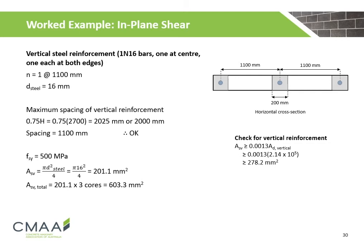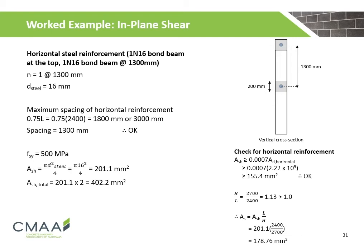For vertical reinforcement, N16 steel bars are located one at each edge and one at the centre, spaced at 1,100 mm. The spacing shall be less than 0.75 times the height or 2,000 mm, and the chosen spacing satisfies this check. The total shear steel reinforcement for the three grouted cores is calculated to be 603.3 mm². We must also check that this exceeds the minimum area of vertical reinforcement, which it does, so we will use this value.